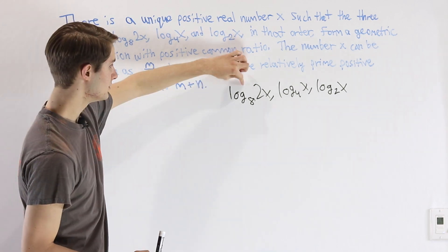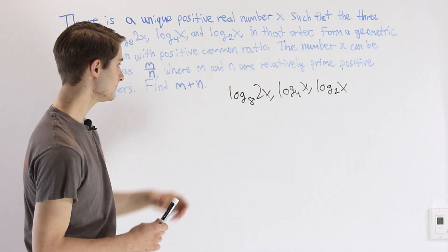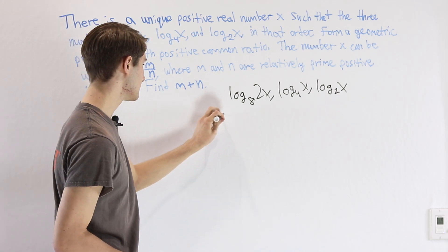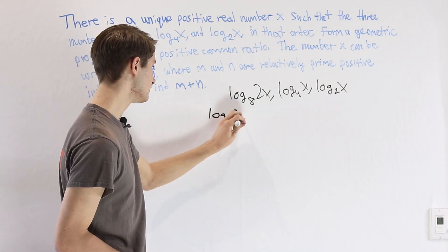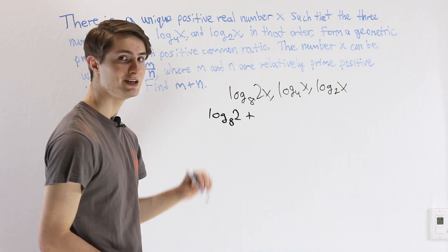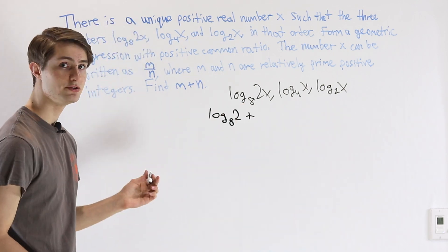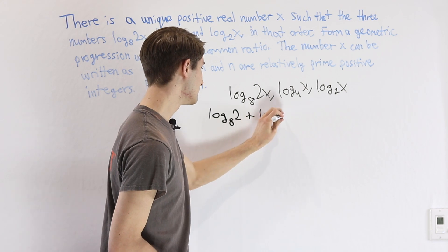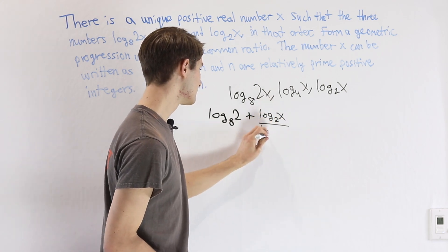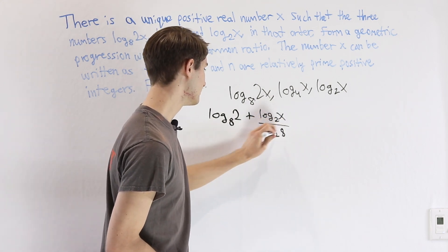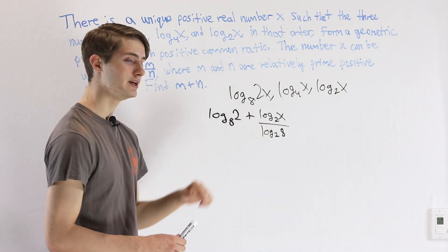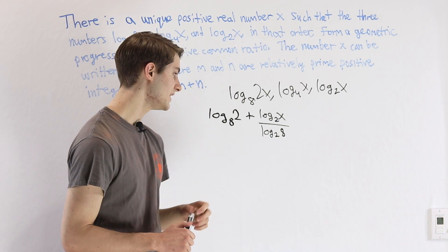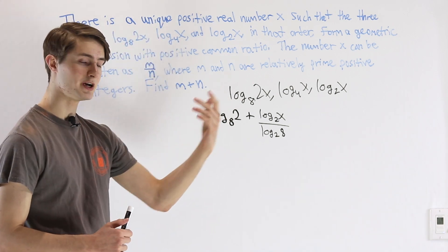So the first thing we can do on this logarithm here is split up the inside because we see a product of 2 times x. So we can write that as log base 8 of 2 plus log base 8 of x. And then we use the change of base formula to write log base 8 of x as log base 2 of x over log base 2 of 8. So 2 is now our new base. If we think about log base 2 of 8, well, 2 to the third power is 8.